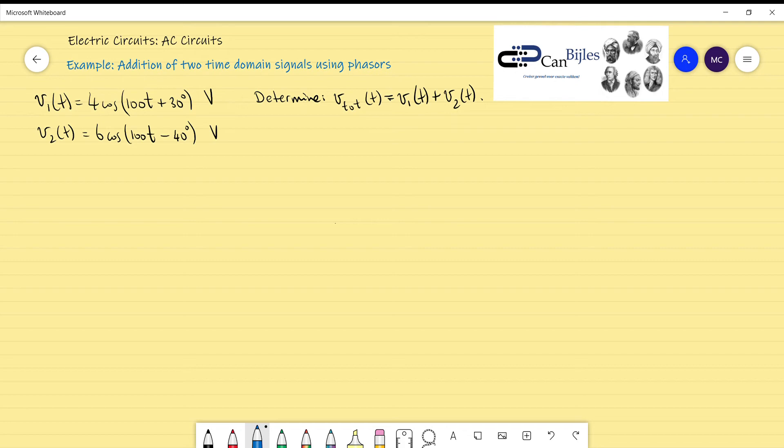At the end we would like to have the time domain representation of the total signal. V_tot is equal to V1 plus V2. Let's first denote them in the polar notation just to give the situation a clear picture.